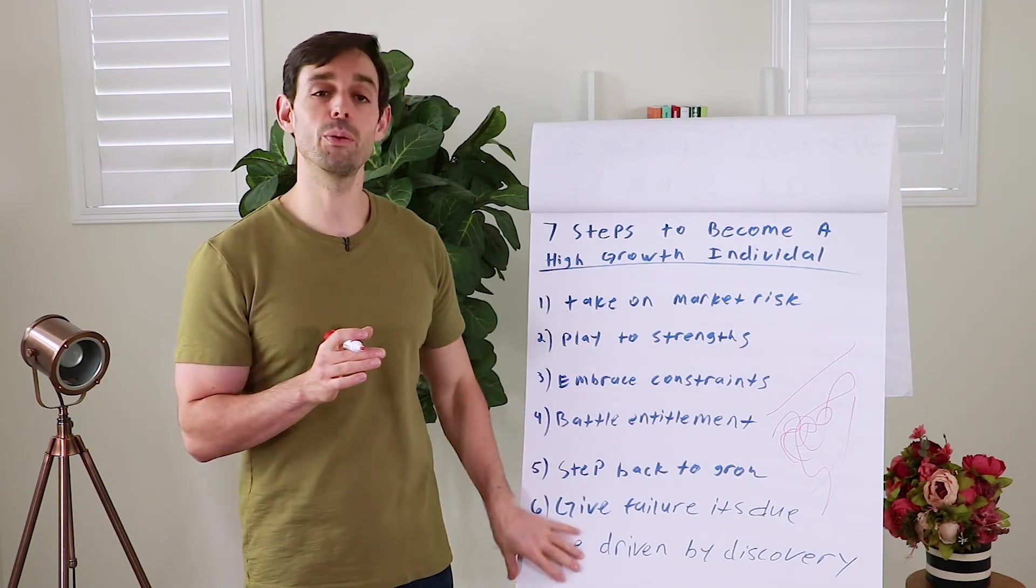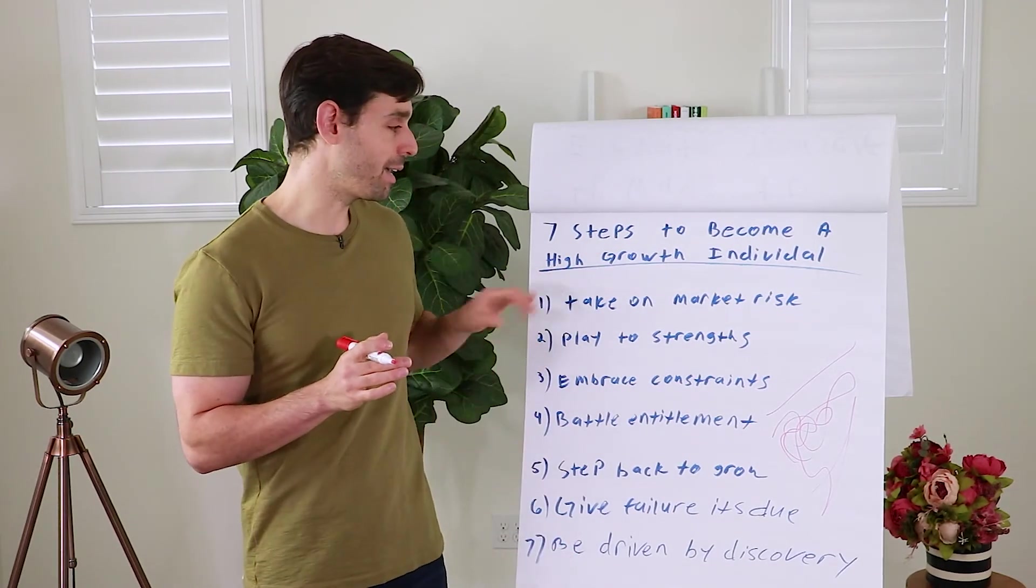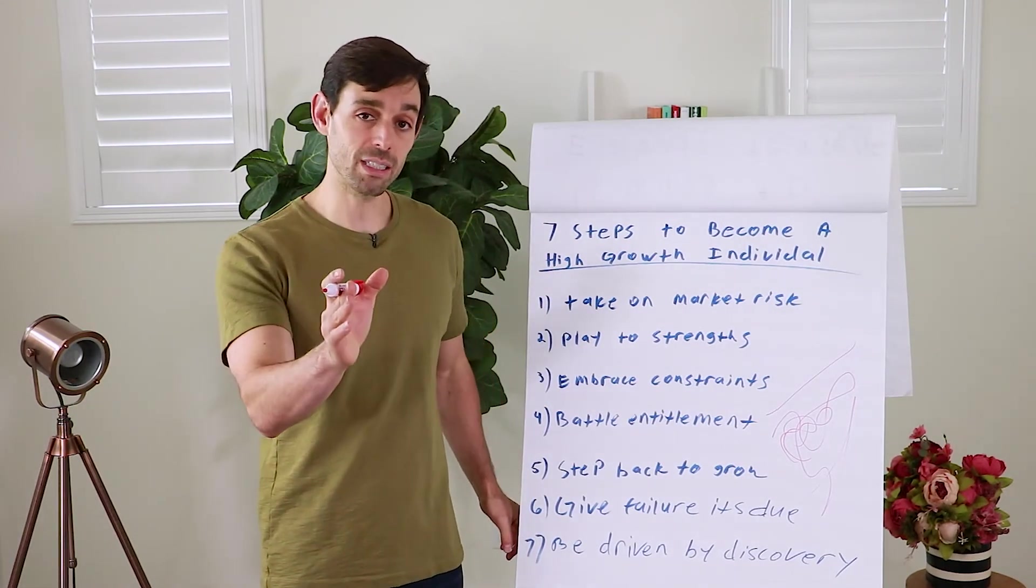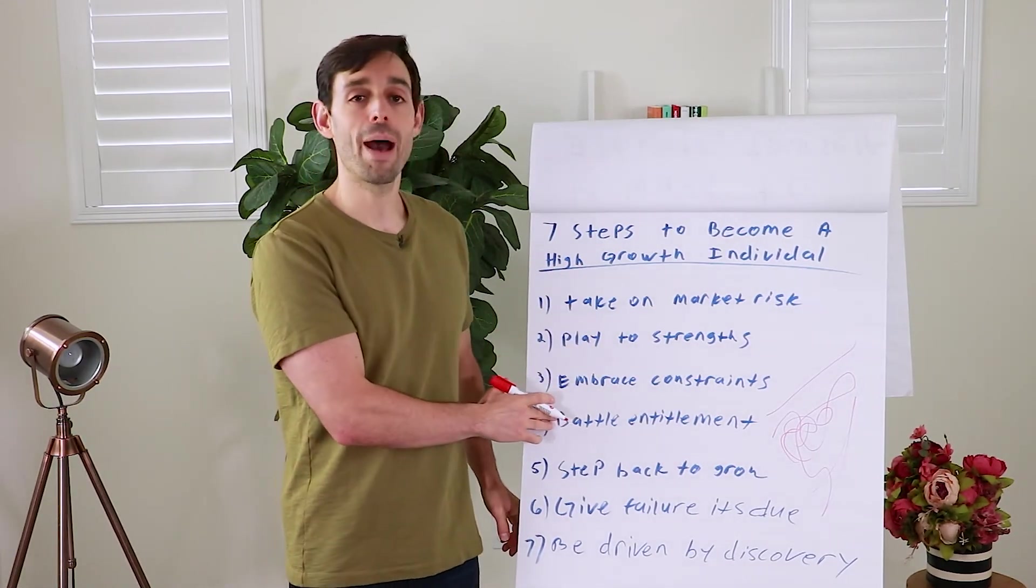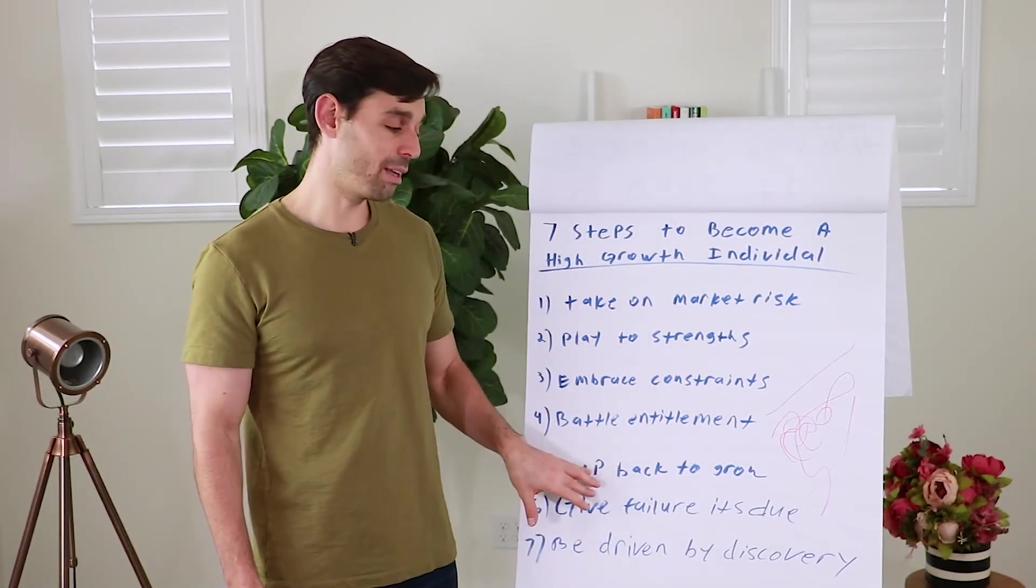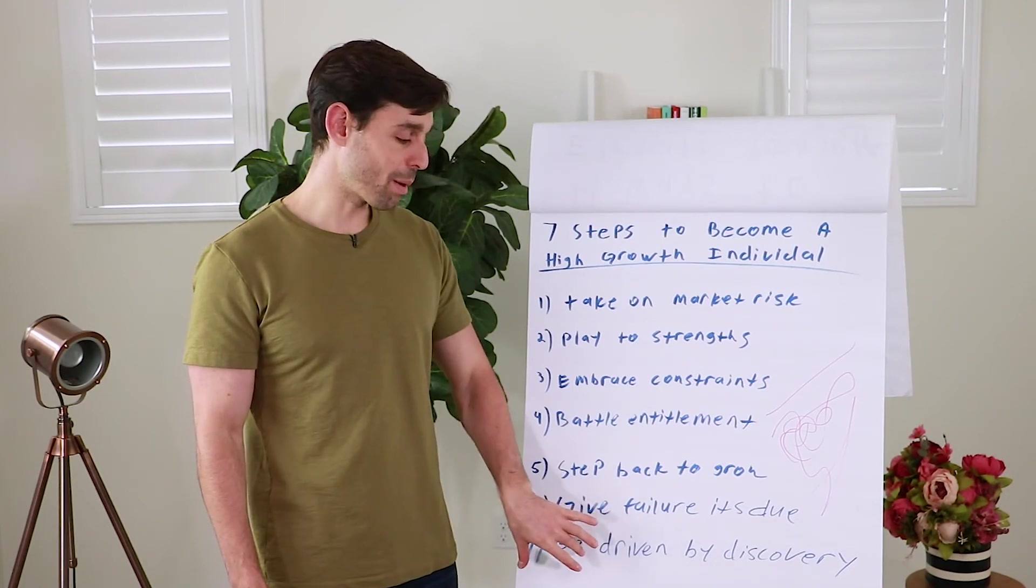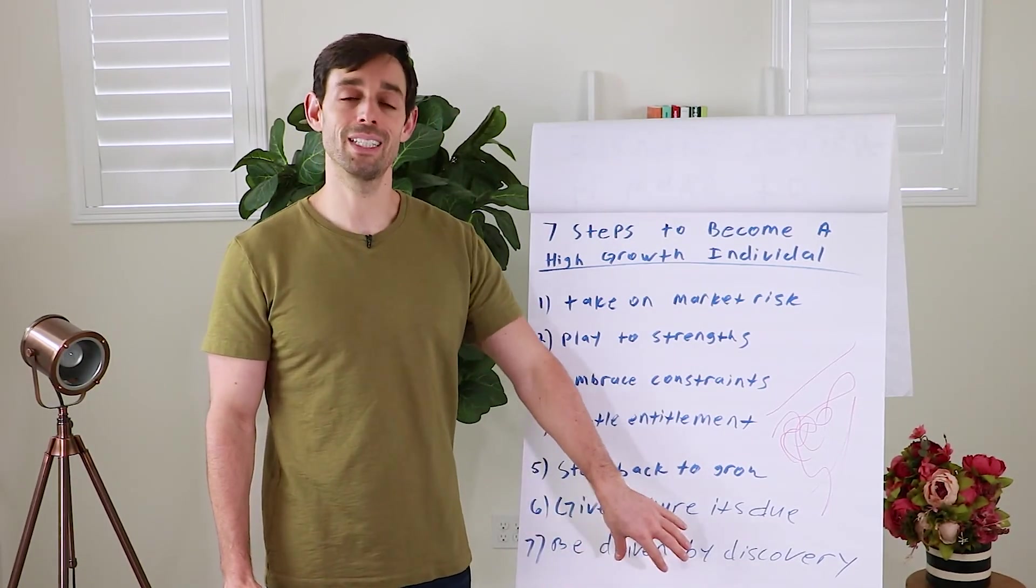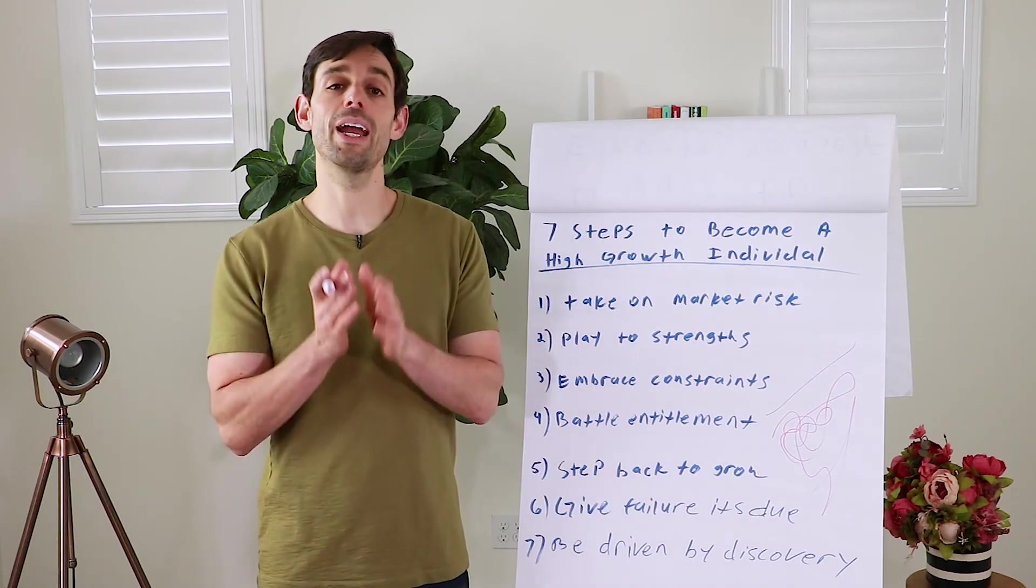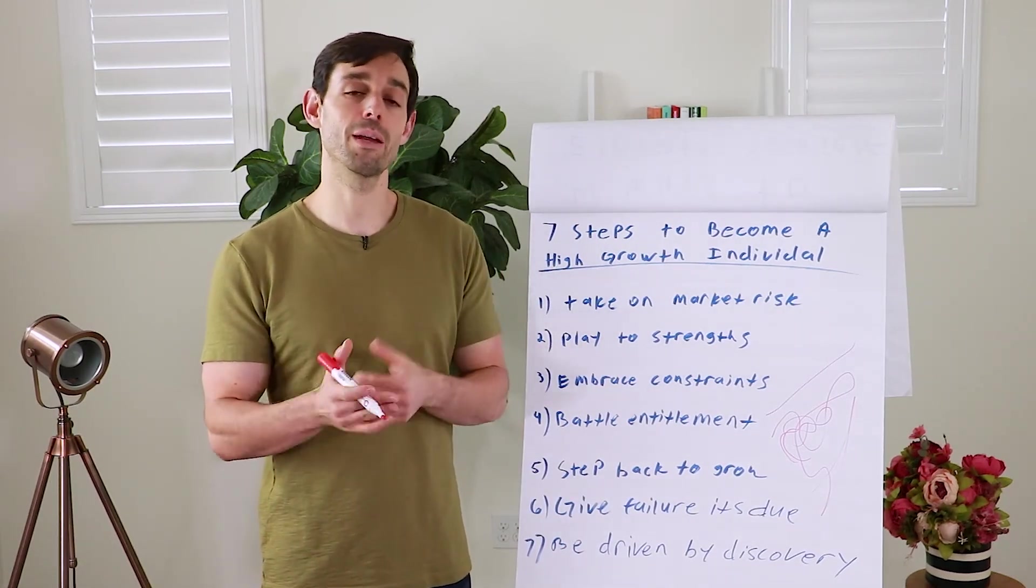So these are the seven steps that Whitney talks about. Take on market risk. Play to your strengths. Embrace your constraints, which I think is one of the most important ones. Battle your sense of entitlement. Step back to grow. Give failure its due. And remember to be driven by discovery. I hope you can implement these seven steps in your career and your life. It'll help for personal and professional mastery.